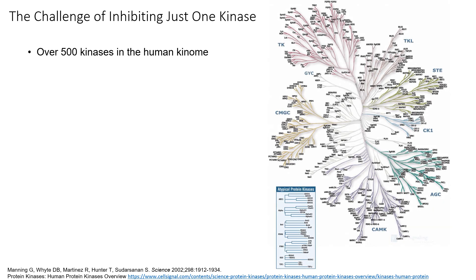So what is the challenge when you want to inhibit only one kinase or a small group of kinases? There are over 500 kinases in the human kinome. A kinase is essentially an enzyme that uses ATP to produce energy. A depiction of these kinases is shown on this slide, and I encourage you to look at the reference for an interactive image of all the different kinase families.